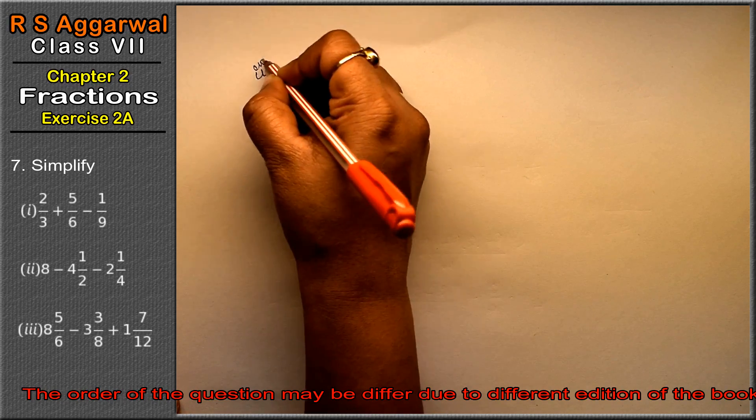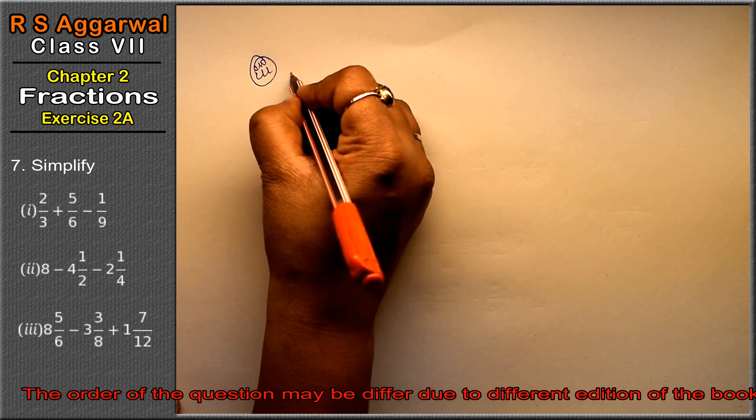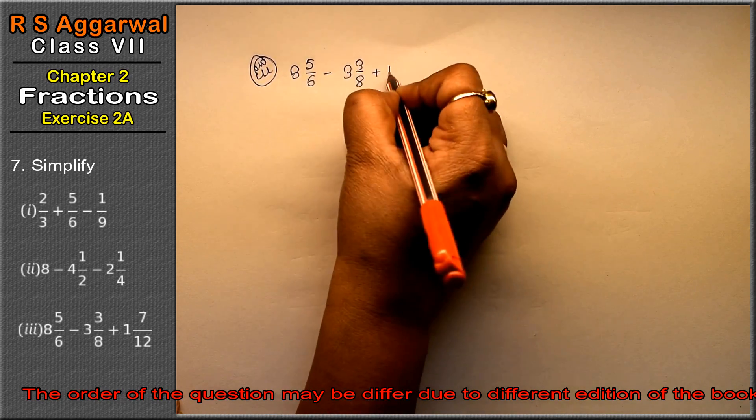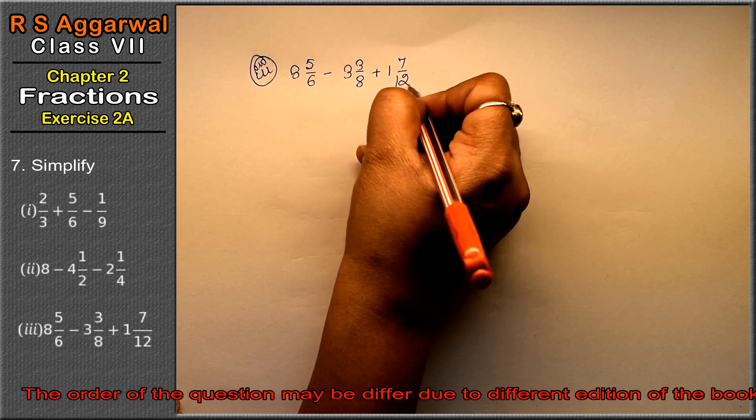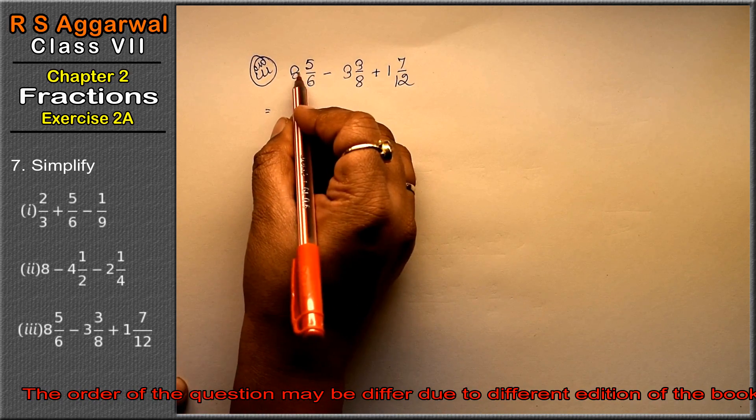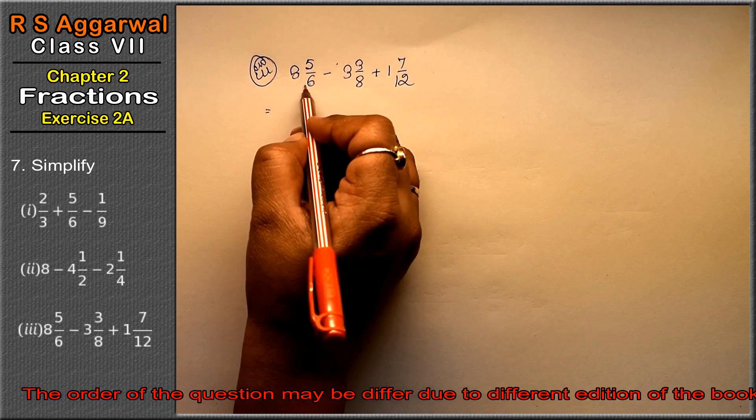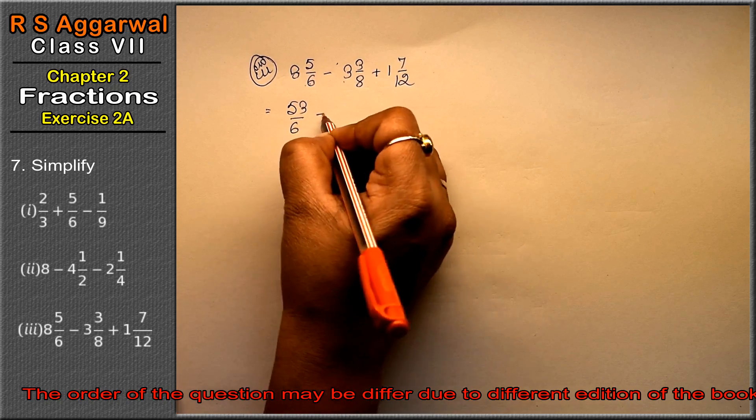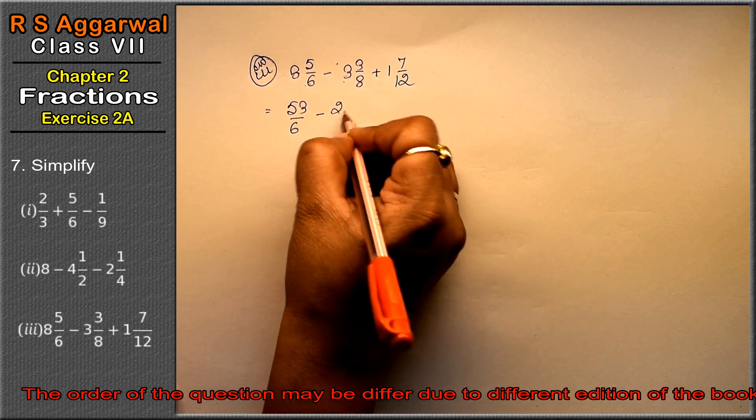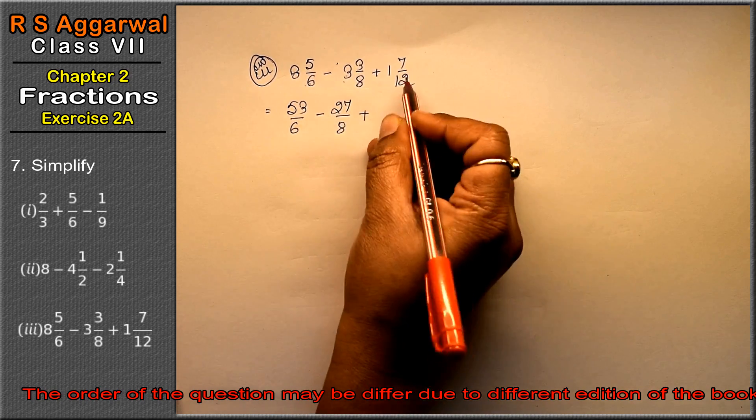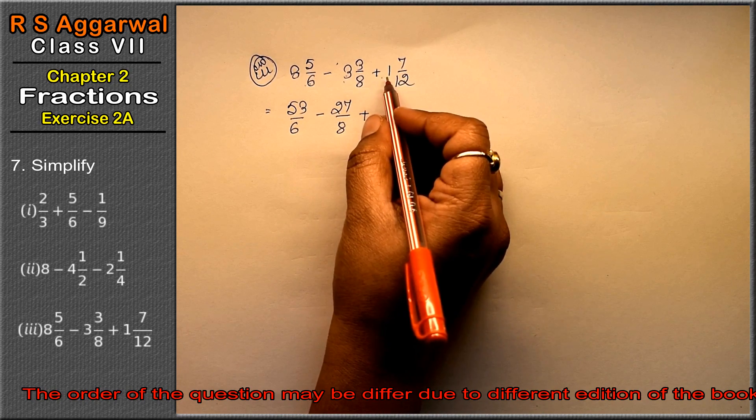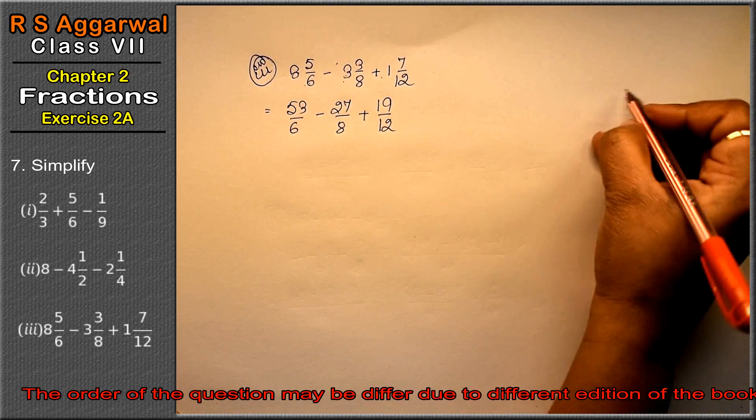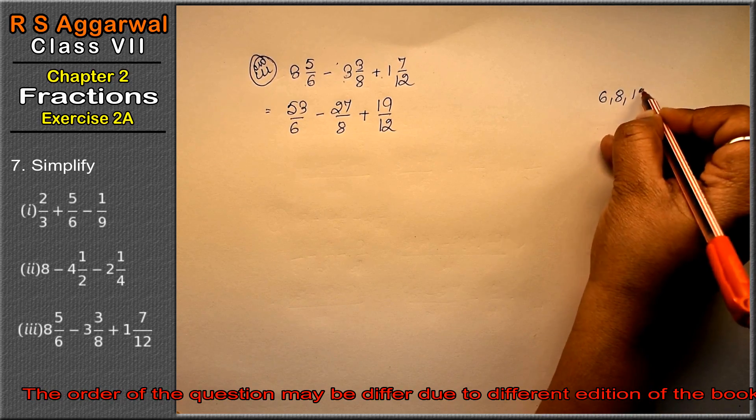Let's do third part. Third part is 8 whole 5 upon 6 minus 3 whole 3 upon 8 plus 1 whole 7 upon 12. So 6, 8 is 48, 49, 50, 51, 52, 53 upon 6 minus 8, 3 is 24, 27 upon 8 plus 12, 1 is 12, 13, 14, 15, 16, 17, 18, 19 upon 12.